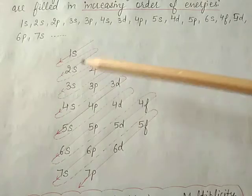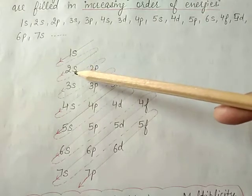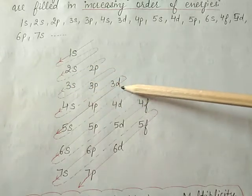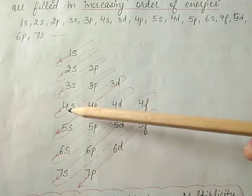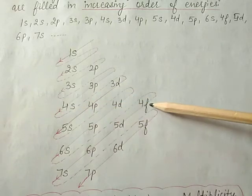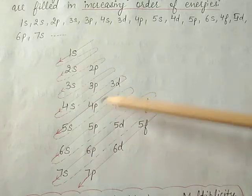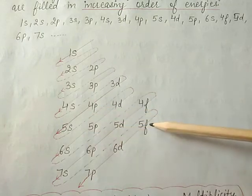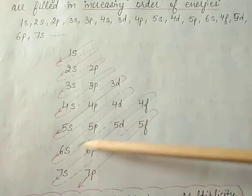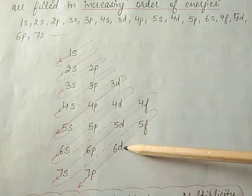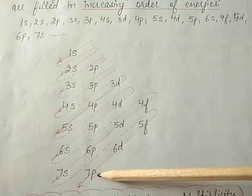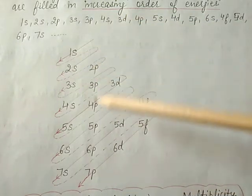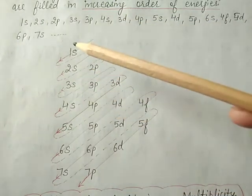How to make the arrow table: first write 1s, then 2s, 2p, then 3s, 3p, 3d, then 4s, 4p, 4d, 4f, then 5s, 5p, 5d, 5f, then 6s, 6p, 6d, then 7s, 7p. This arrow table is filled according to the n+l rule.